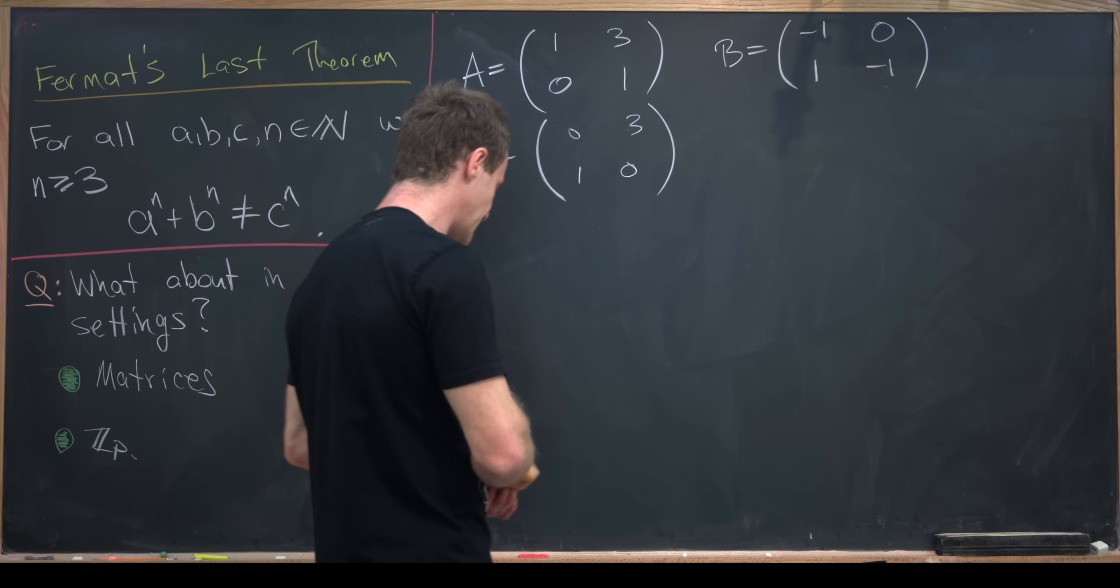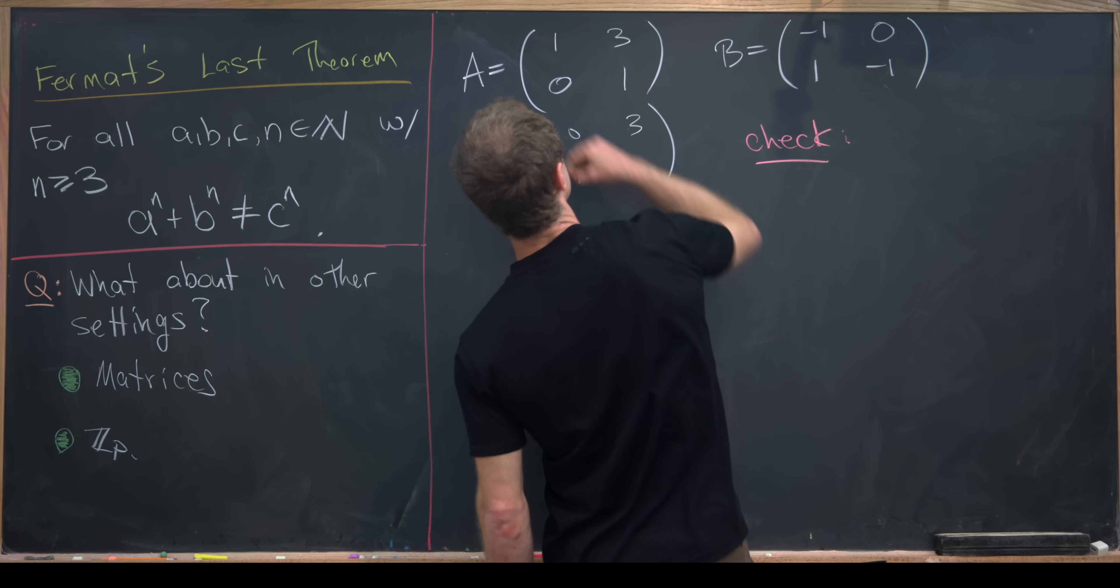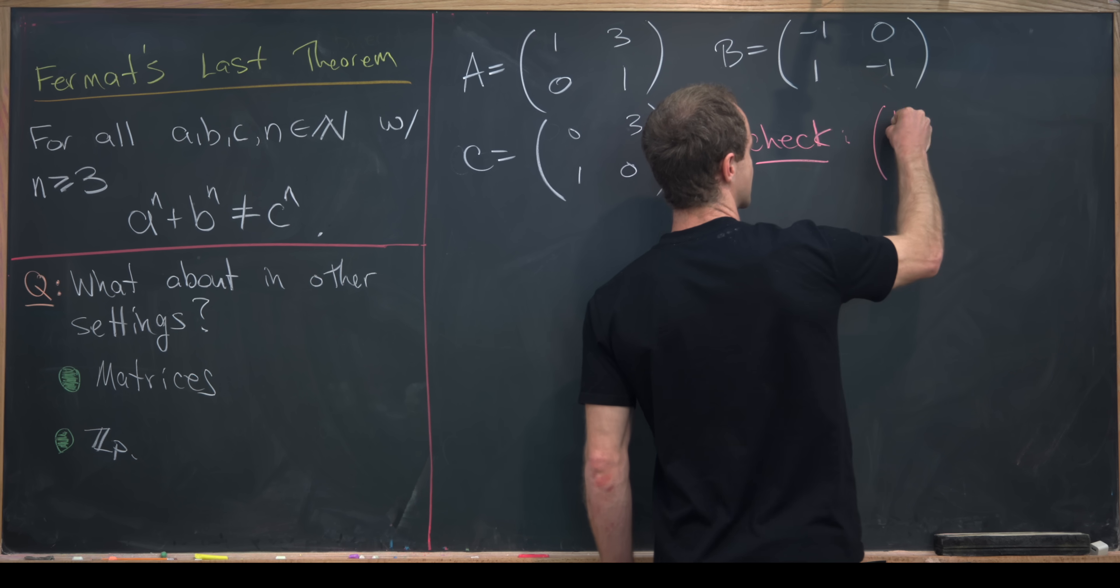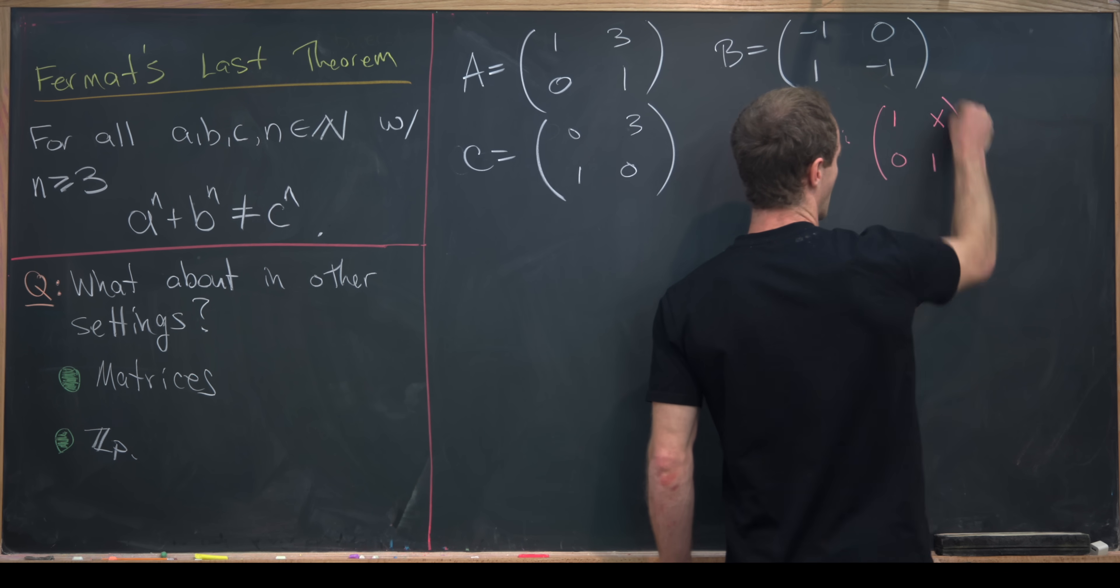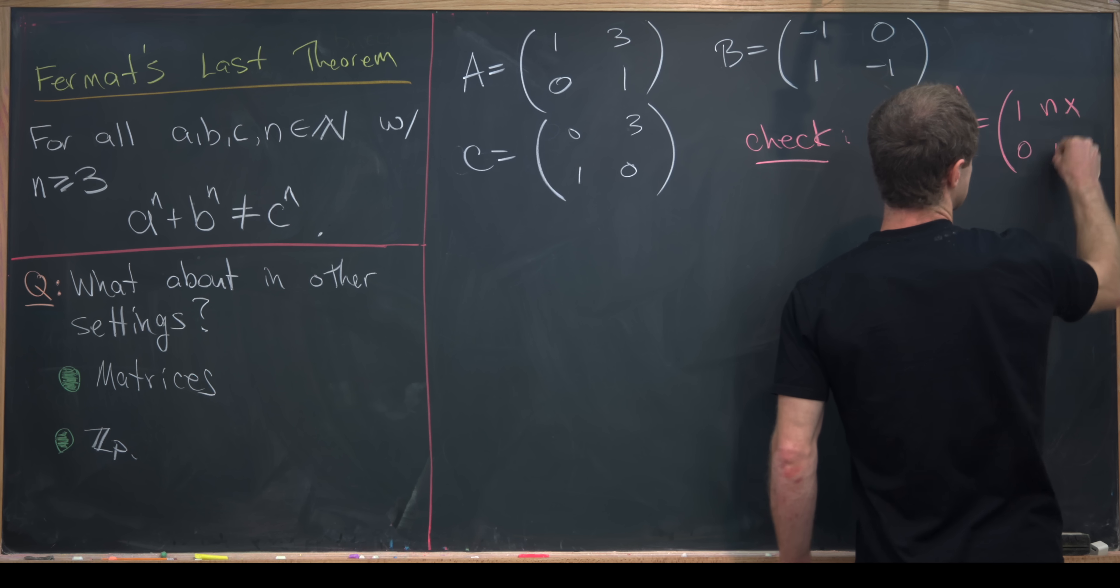So I'll let you guys check this nice little trick for finding the cube of matrices like A. So I'll write it like this: 1, x, 0, 1 to the nth power is in fact 1, n times x, 0, 1.